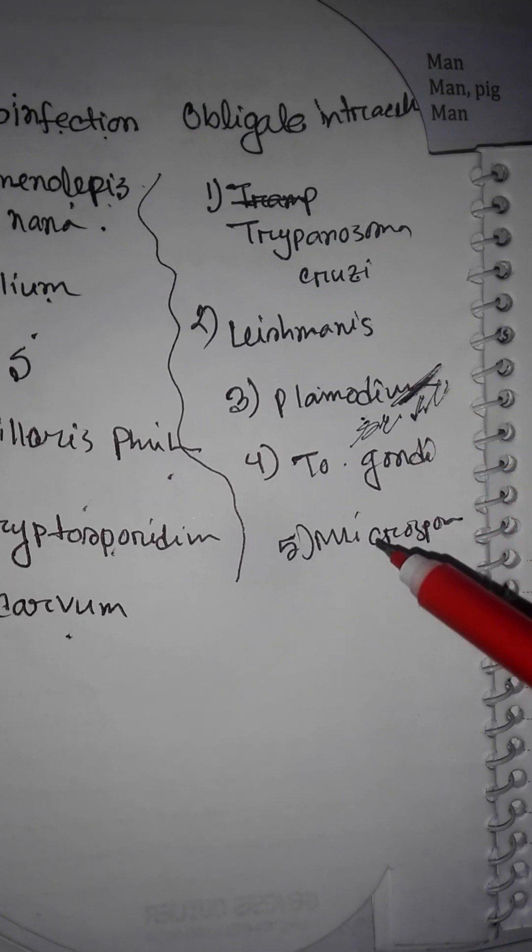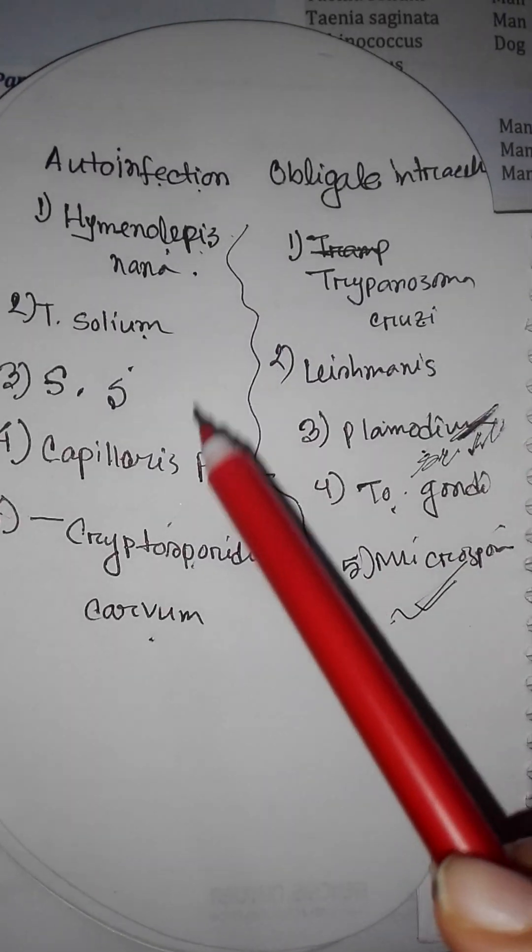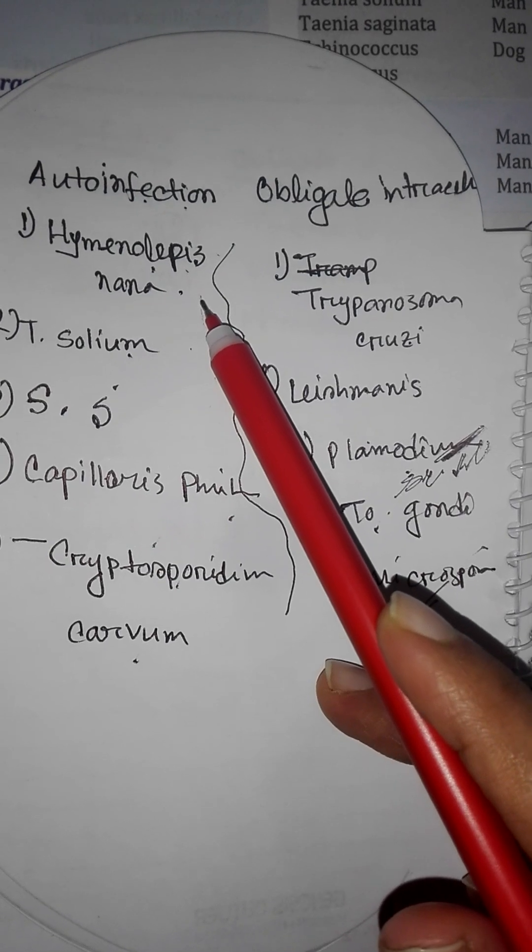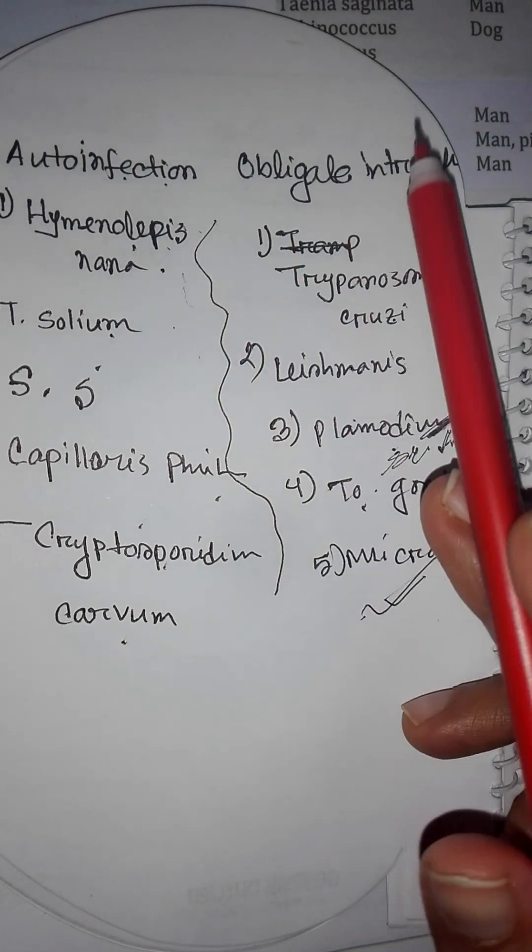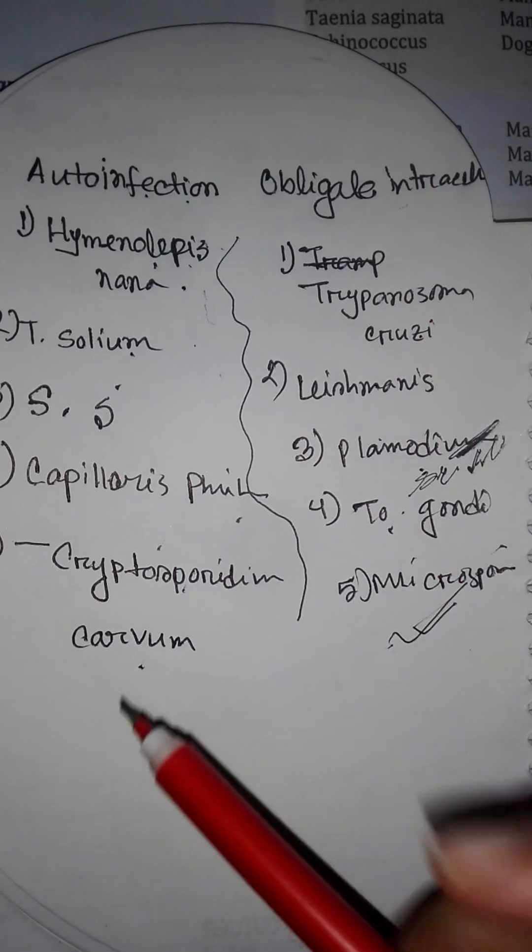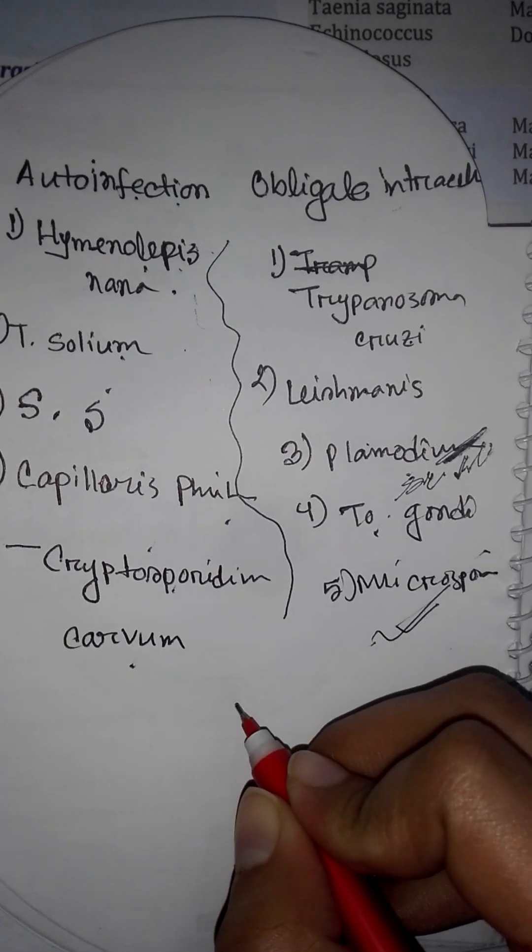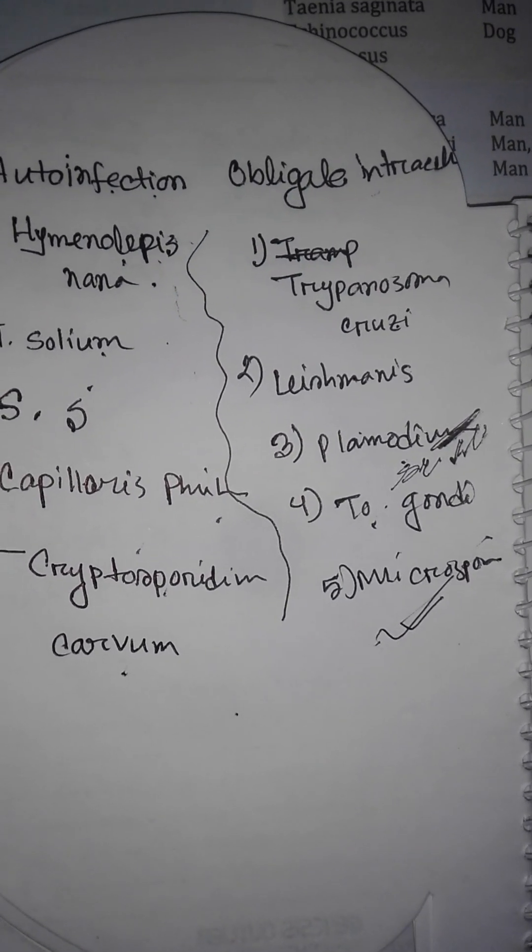Falciparum, vivax, ovale, Toxoplasma gondii, Microsporidium. I don't know any mnemonics to remember these auto infection parasites and obligate intracellular parasites. If you know any mnemonics, please mention in the comment section.